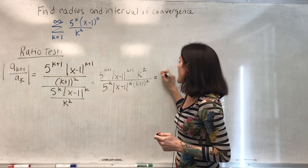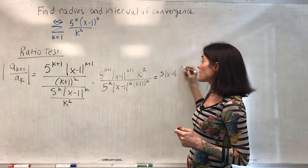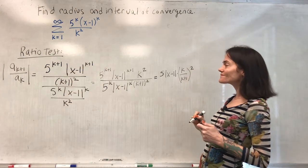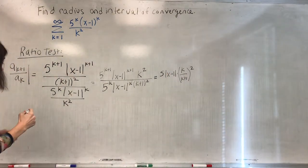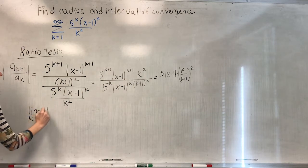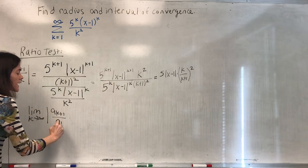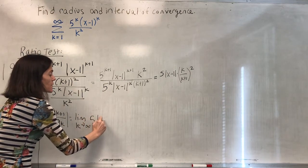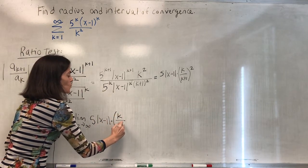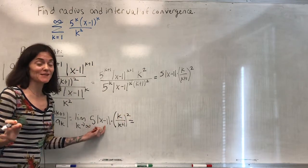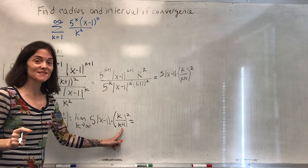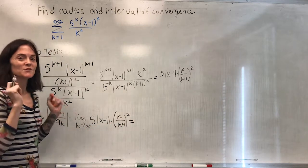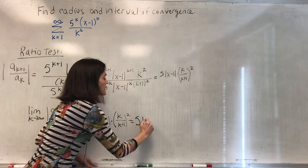Now some things cancel. We have 5 in the numerator, |x minus 1| in the numerator, and then this multiplied by (k over k+1) squared. Using the ratio test, I take the limit as k goes to infinity of |a_{k+1} over a_k|. I've already simplified, so I'm ready. It's 5 times |x minus 1| times (k over k+1) squared. As k goes to infinity, k over k+1 goes to 1, so that term goes to 1. This limit is therefore 5|x minus 1|.